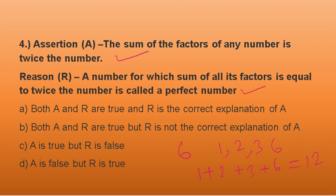A number for which sum of all its factors is equal to twice the number is called a perfect number. Yes, this is the definition of the perfect number. So our answer would be A. Both A and R are true and R is the correct explanation of A.